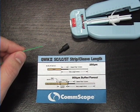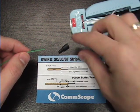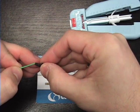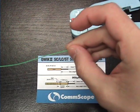Today we will terminate the LC version of the CommScope Quick Connector 2. First, we can slide the boot onto the fiber and out of the way.